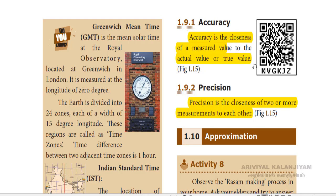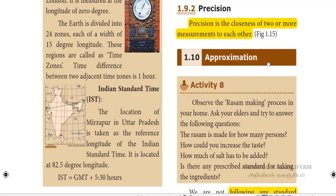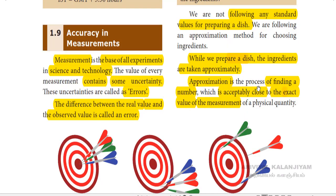Accuracy and precision: there are two measurements compared to each other. Accuracy is different from precision. Next one is approximation. Approximation is the process of finding a number which is acceptably close to the exact value of the measurement of a physical quantity. Approximation is different from precision.